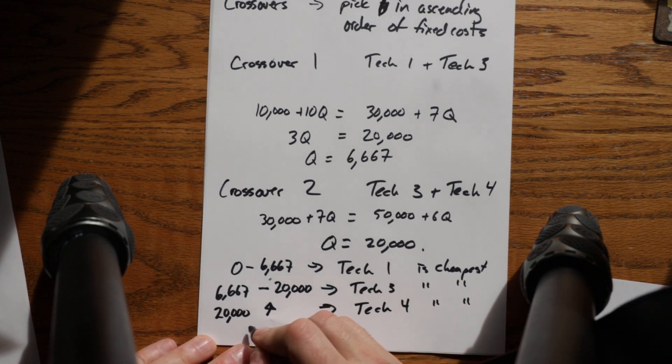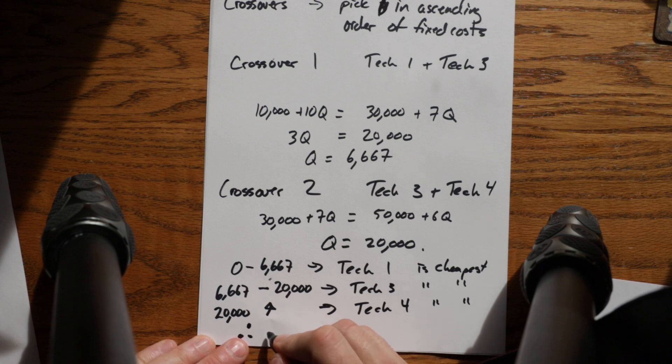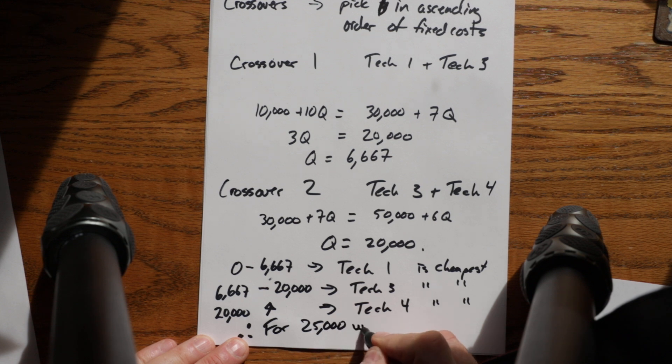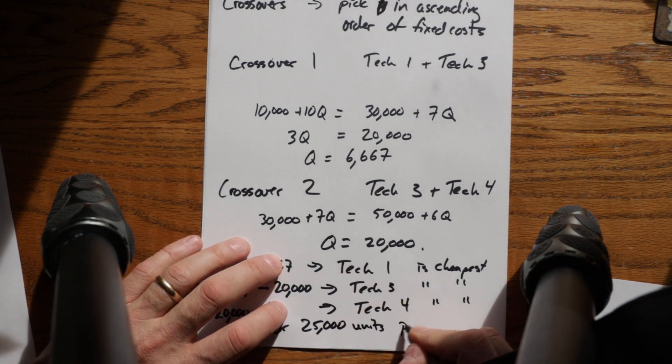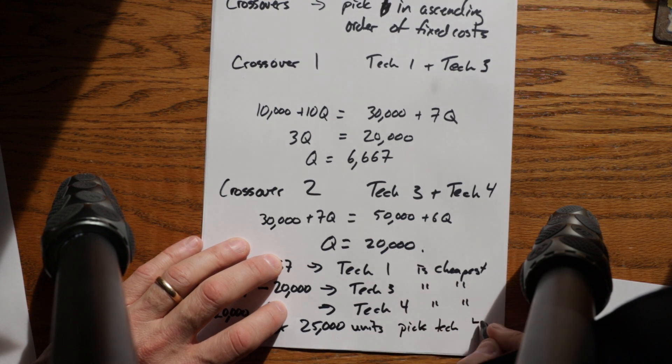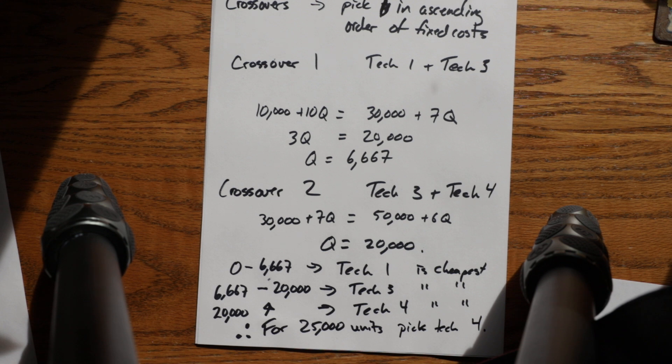So therefore, in this case, for 25,000 units, pick technology four. Pretty simple, straightforward rule for ruling out a technology, pick them in ascending order.